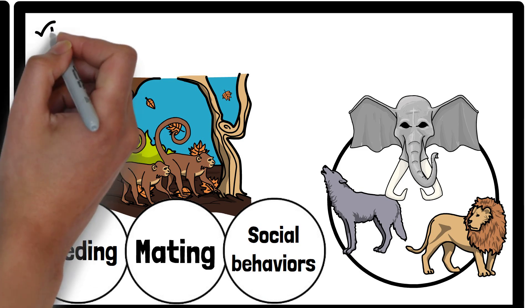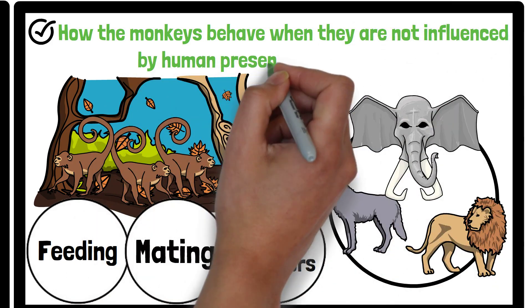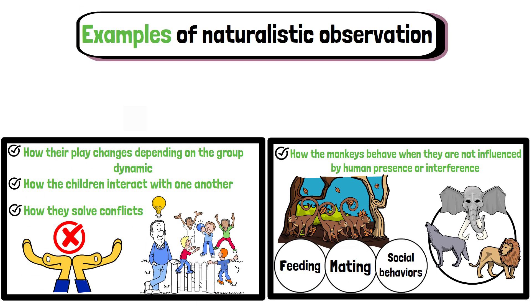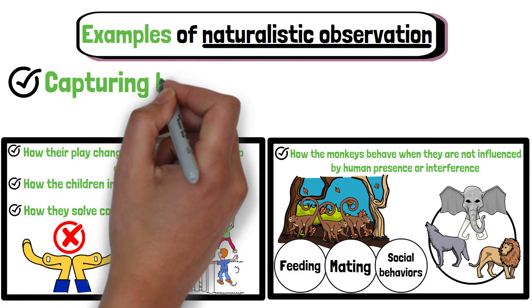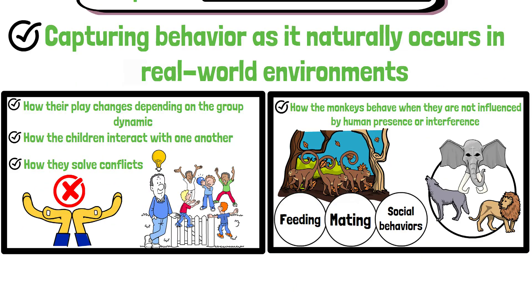This method allows the researcher to see how the monkeys behave when they are not influenced by human presence or interference. In both cases, naturalistic observation provides authentic data by capturing behaviour as it naturally occurs in real world environments.